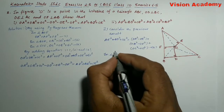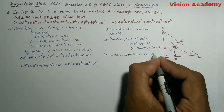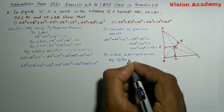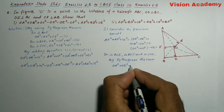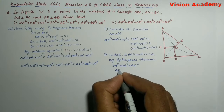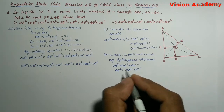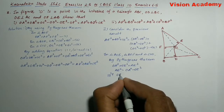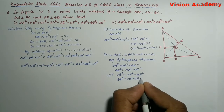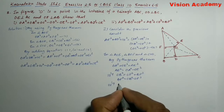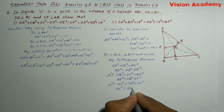In triangle AOE, triangle BOF, and triangle COD, by the Pythagoras theorem: OA² = OE² + AE², so AE² = OA² − OE². Similarly, OB² = OF² + BF², so BF² = OB² − OF². And OC² = OD² + DC², so DC² = OC² − OD².